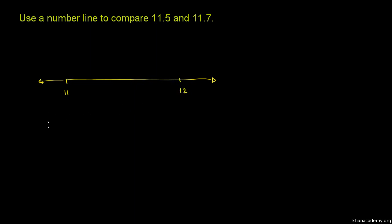And then let me draw the tenths. So this would be smack dab in between. So that would be 11 and 5 tenths, or that would be 11.5. Well, I've already done the first part. I've figured out where 11.5 is. It's smack dab in between 11 and 12. It's 11 and 5 tenths.